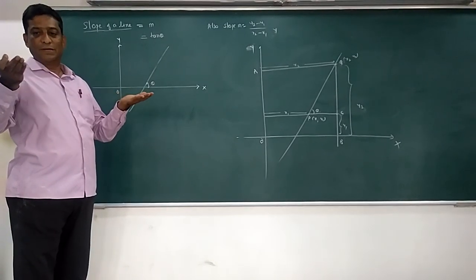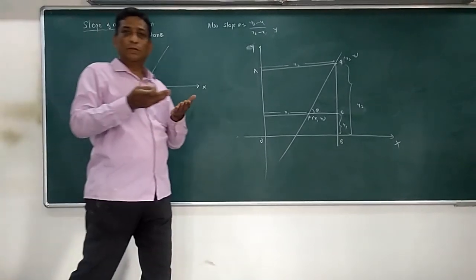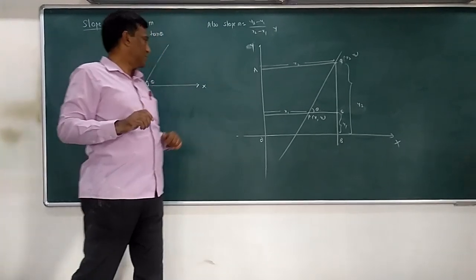For a horizontal line, there cannot be slope. Inclination is zero, so slope will be zero.